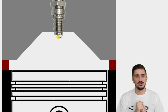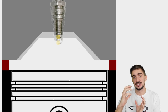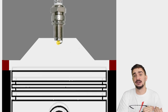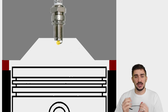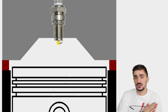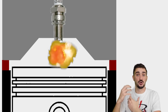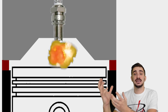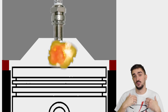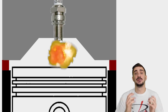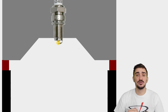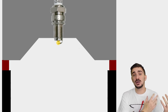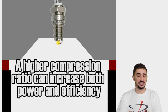In general, a higher compression ratio is achieved by reducing the size of the combustion chamber and/or by bringing the piston closer to the combustion chamber. In both cases, we're bringing the piston closer to the source of the energy, allowing more of this energy to be transferred onto the piston more effectively and be turned into mechanical energy. In other words, by increasing the compression ratio, we can increase both the power output and the efficiency of the engine.